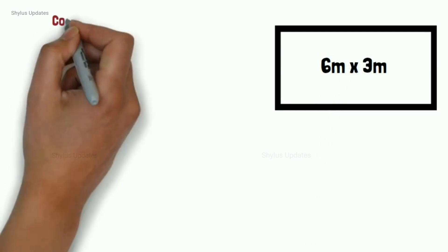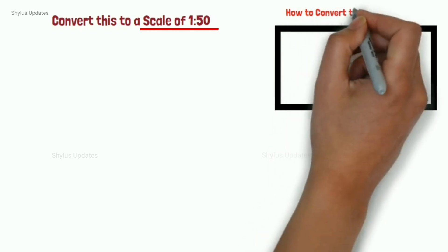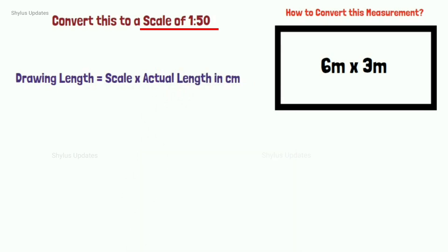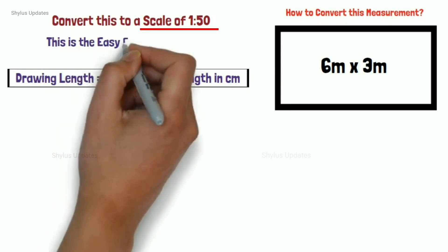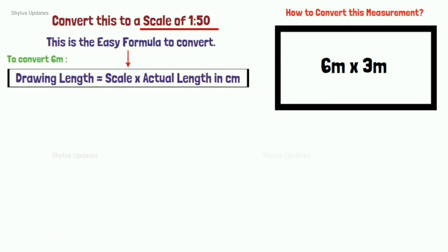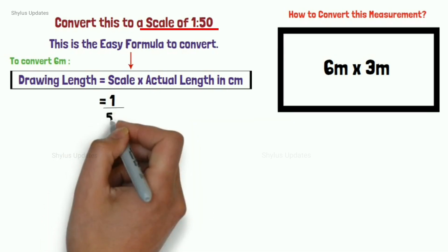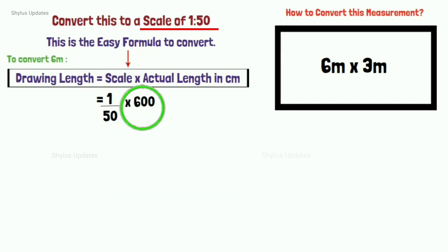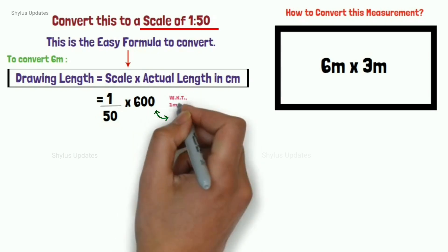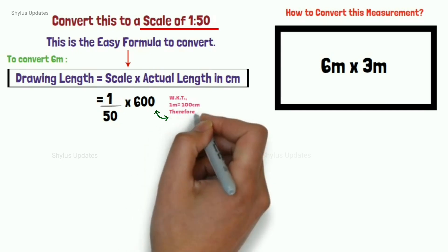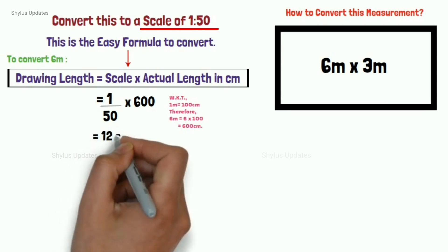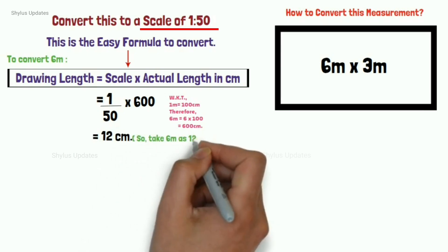Next example — scale of 1 to 50. If we have a plot of size 6 meters by 3 meters and the scale given is 1 to 50, how do we convert this measurement? Use the same formula: Drawing length = scale × actual length in centimeters. Scale is 1/50, and actual length is 6 meters. Convert 6 meters to centimeters: 6 × 100 = 600 cm. So: (1/50) × 600 = 12 cm. Take 6 meters as 12 centimeters in the drawing.